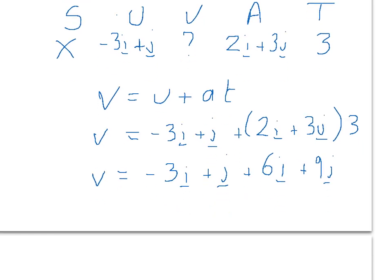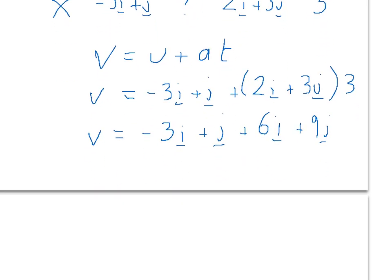Now remember, we can collect together the i components and the j components to find the final velocity after 3 seconds. So minus 3 plus 6i is 3i. And 1 plus 9 is 10j.